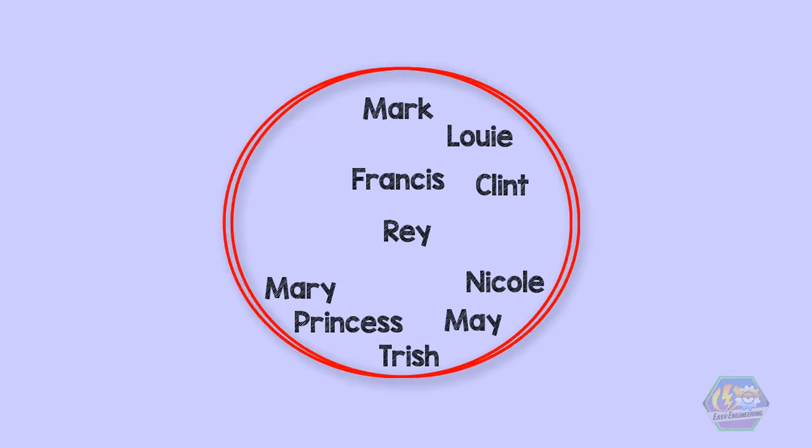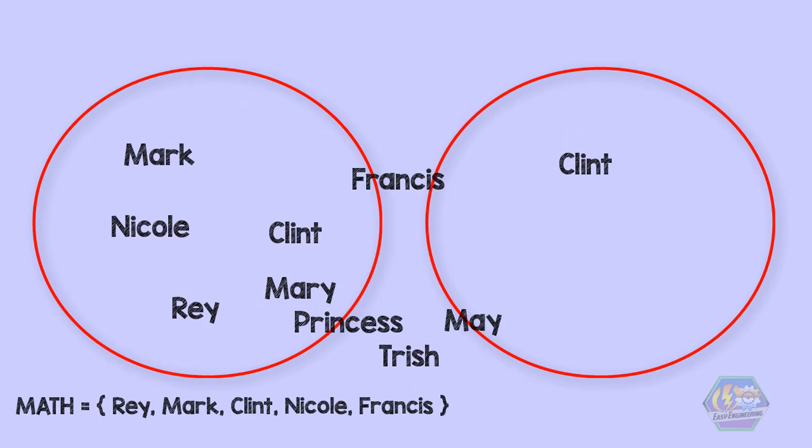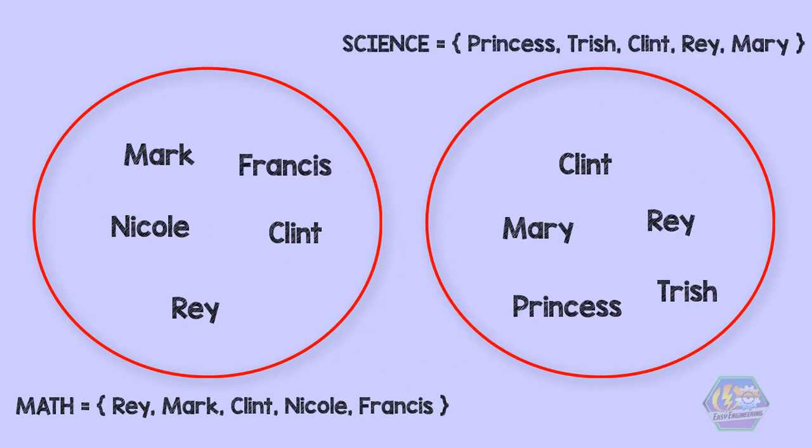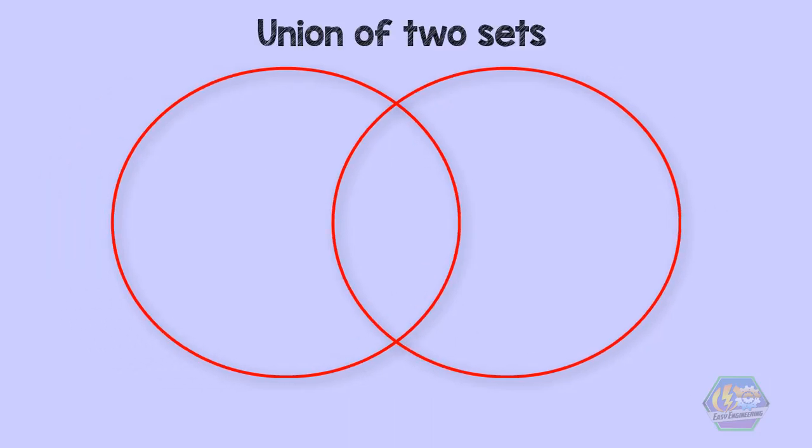Now let's say that Ray, Mark, Clint, Nicole, and Francis like math. Meanwhile, Francis, Trish, Clint, Ray, and Mary like science. We can put their names into two separate circles. If we want to list the students who like math or science, then we can write the union of the two sets.